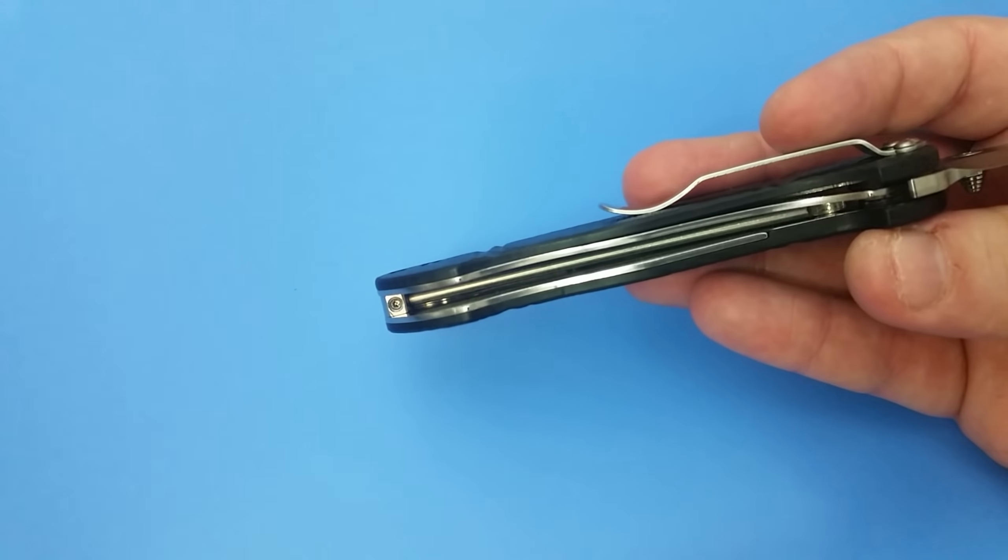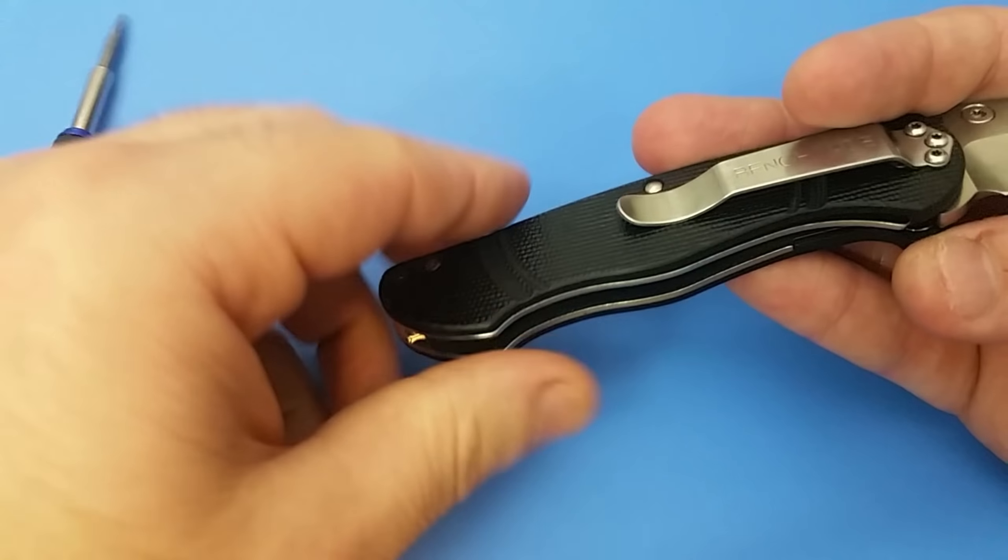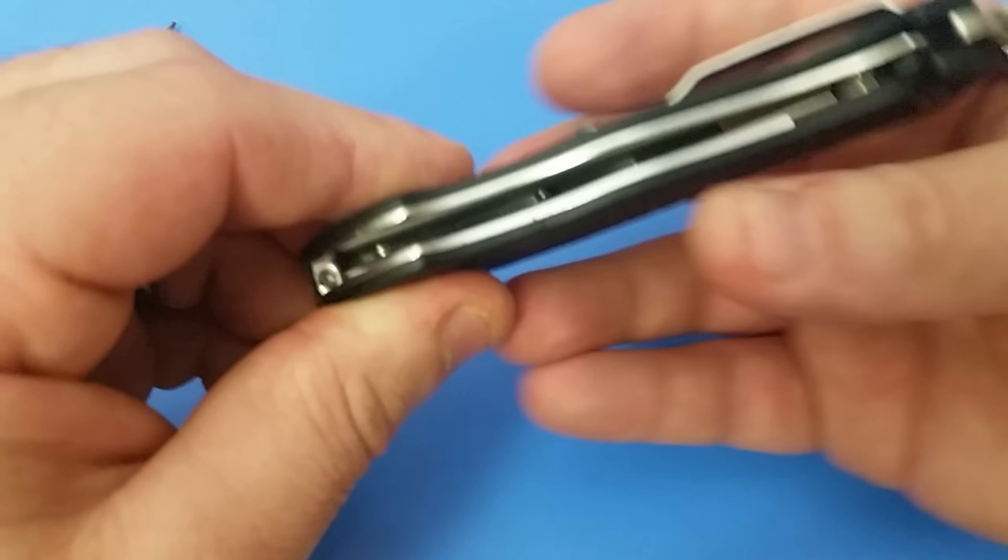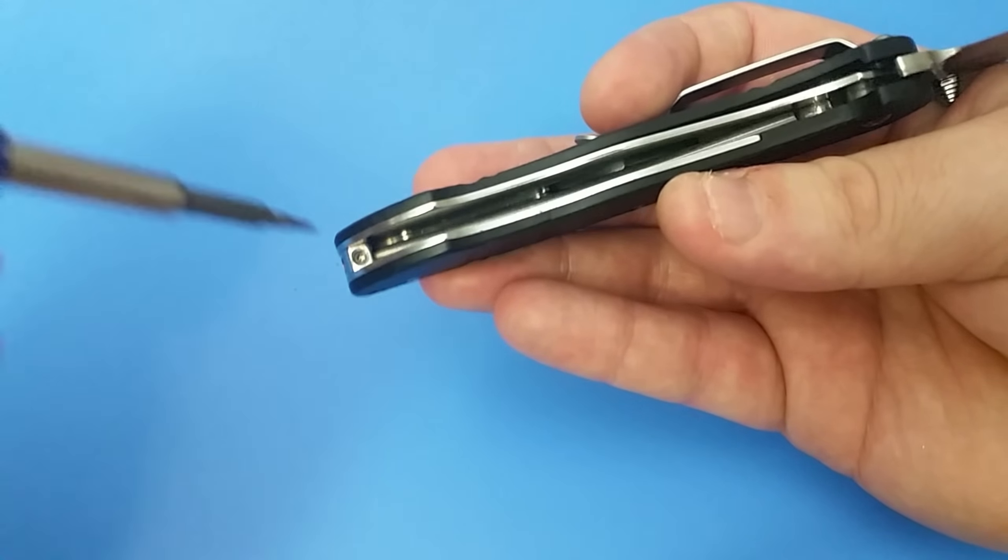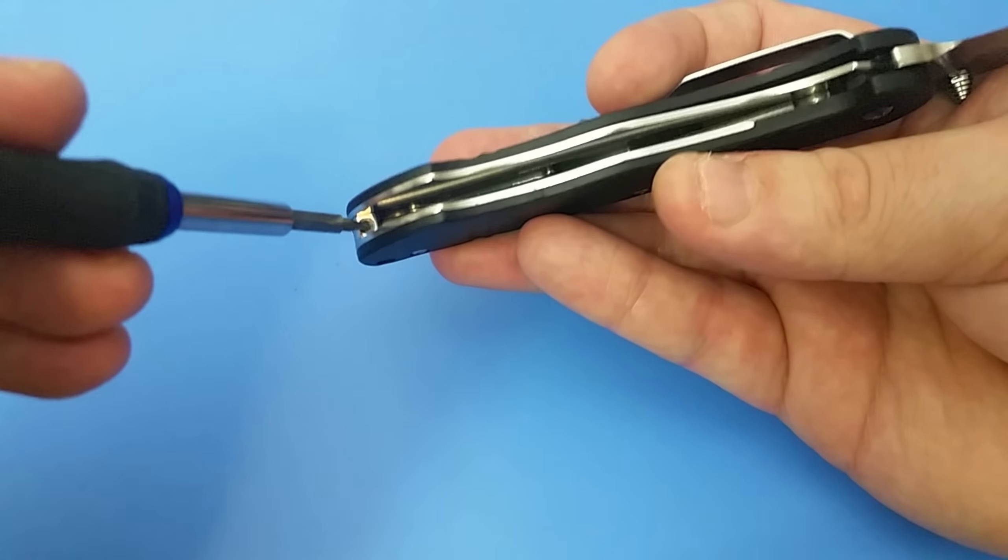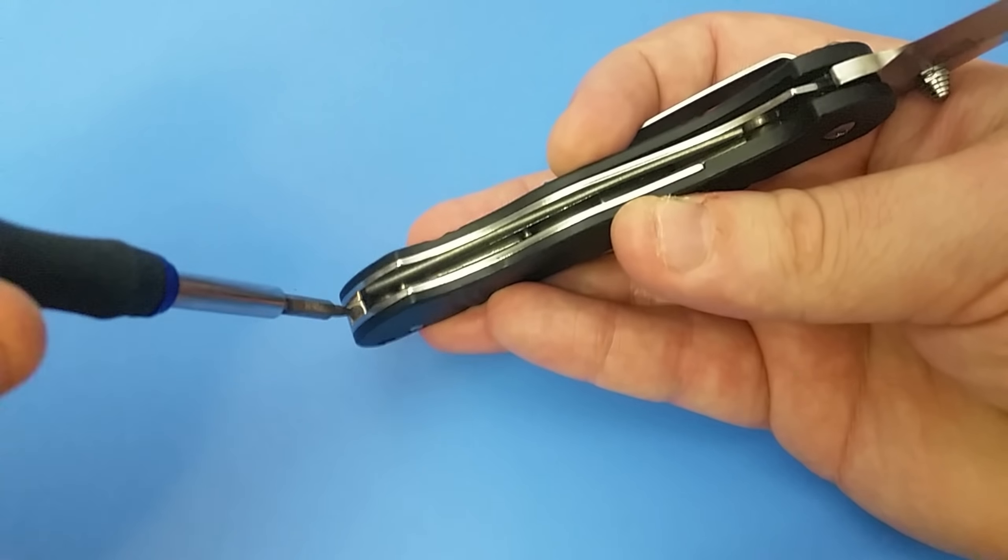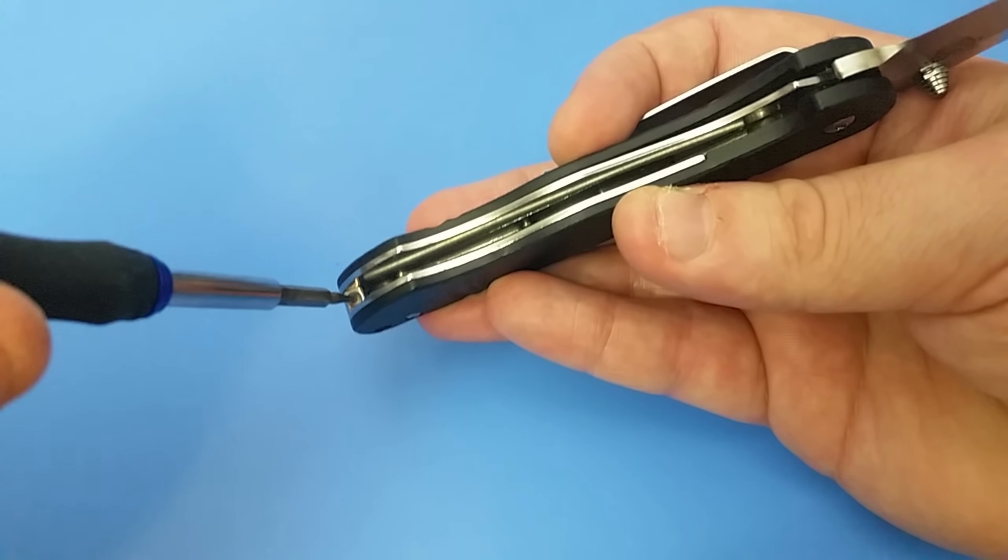And I'm always looking to de-assist a knife if possible. And the thing that makes this one, this Osborne design so genius, is the fact that you can de-assist this knife in about 10 seconds without taking it apart. So check this out.